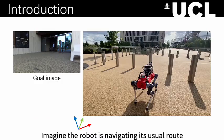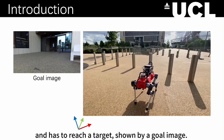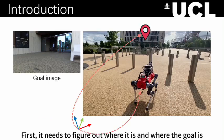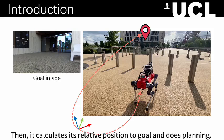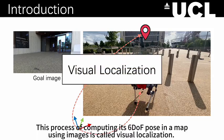Imagine the robot is navigating its usual route and has to reach a target, shown by a goal image. First, it needs to figure out where it is and where the goal is. Then, it calculates its relative position to the goal and does planning. This process of computing its 6-DOF pose in a map using images is called visual localization.